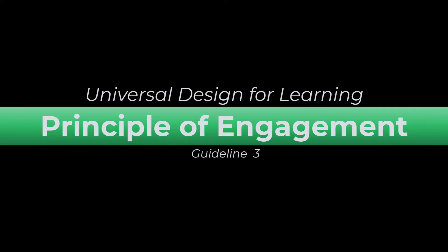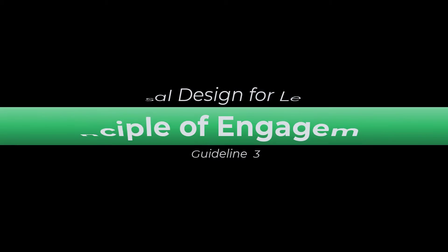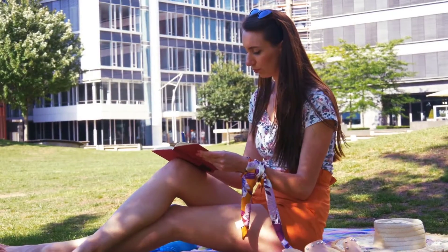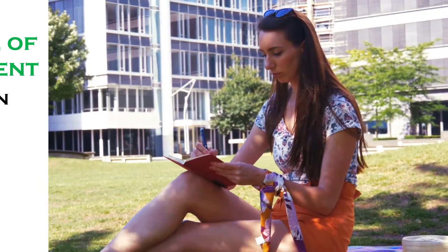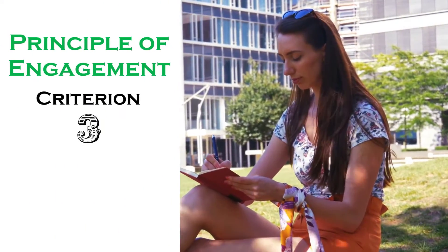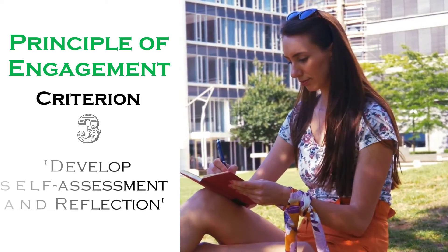When developing a course using the third principle of Universal Design for Learning, there are three specific guidelines to assist us. The third — self-regulation — addresses maintaining focus and determination. Criterion 3 of this guideline advocates that we develop self-assessment and reflection.